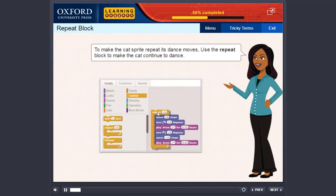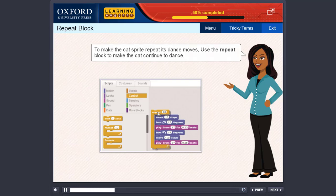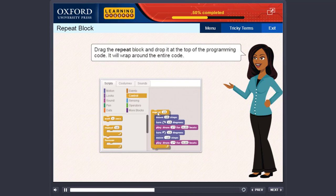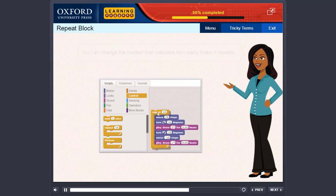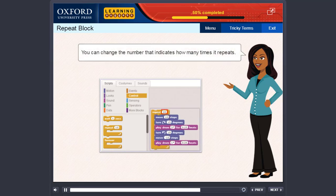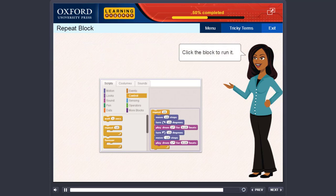To make the cat sprite repeat its dance moves, use the Repeat block to make the cat continue to dance. Select the Control block category. Drag the Repeat block and drop it at the top of the programming code. It will wrap around the entire code. You can change the number that indicates how many times it repeats. Click the block to run it.